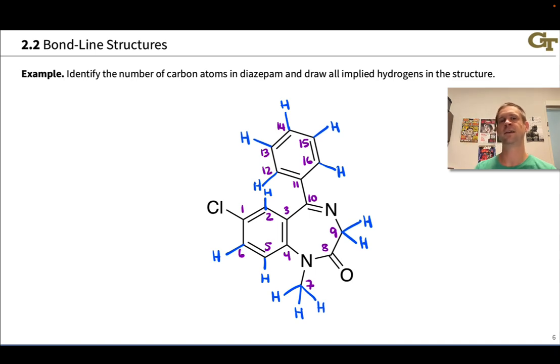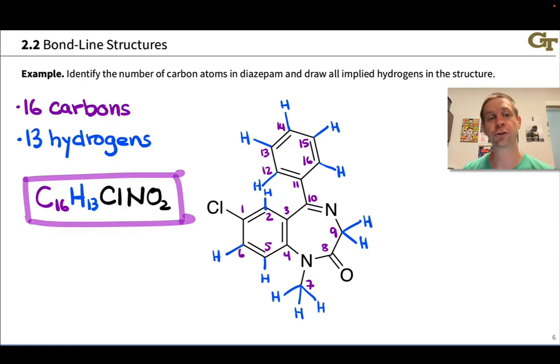So again, the key idea here is we want to satisfy the octet rule at every carbon. Also the formal charge, which we'll come back to a little bit later. But each of these carbons is neutral, implying that it needs four electrons, formally speaking, valence electron count to four, if you like. And these numbers of implied hydrogens also guarantee that. So overall, we found 16 carbons, 13 hydrogens, and the molecular formula of diazepam is C16H13ClN2O.